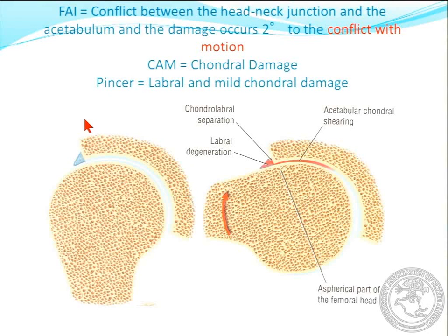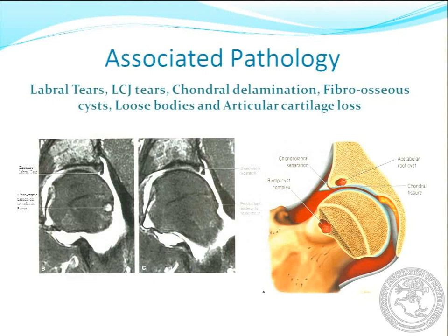With FAI — femoral acetabulum impingement — you just need to understand it's a conflict between the head-neck junction and the acetabulum, with increasing pressures and movement. If you understand that, you'll understand the principles. There is a CAM and pincer type, which you will hopefully be very familiar with now, but there's also associated pathology with femoral acetabulum impingement.